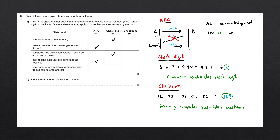Going through the table for checksum: 'Checks for errors on data entry' — checksum is for data transmission, so this does not apply. 'Uses acknowledgement and timeouts' — that only applies to ARQ, so this does not apply. 'Compares two calculated values to see if an error has occurred' — the receiving computer recalculates the checksum and compares it to the received checksum, so this applies. 'May resend data until it is confirmed as received' — we are not requesting retransmission if the checksum is incorrect, so this does not apply. 'Checks for errors in data after transmission from a computer to another' — we send the entire packet and check if the checksum is correct after transmission, so this applies.